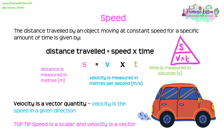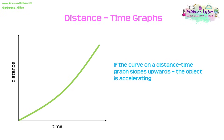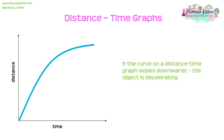Velocity is a vector quantity — it is speed in a given direction. If an object moves along a straight line, the distance travelled can be represented by a distance-time graph. The gradient of that graph gives us the speed. A straight line indicates constant speed, and a steeper line means faster speed. If the curve slopes upward with an increasing gradient, the object is accelerating; if it slopes with a decreasing gradient, the object is decelerating.